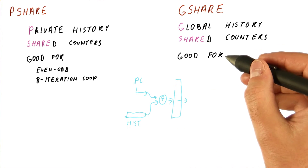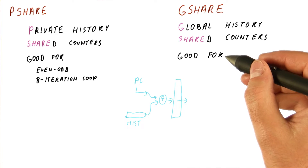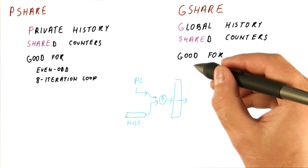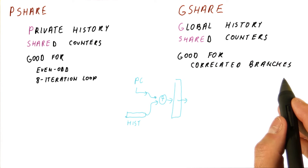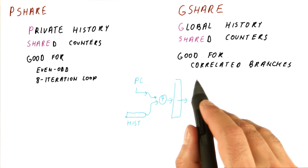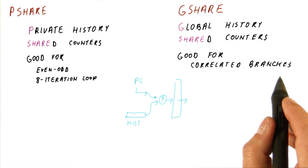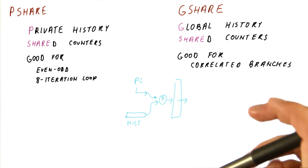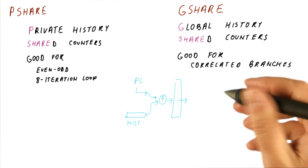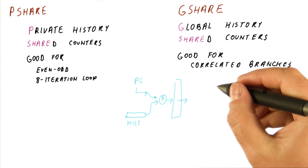So what is g-share good for? It's good for so-called correlated branches — that is, branches whose decision is related to what the other branches in the program were doing. And it turns out that this happens in programs quite often.